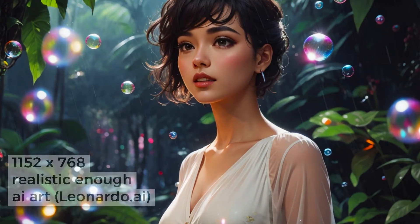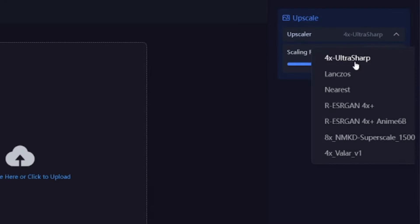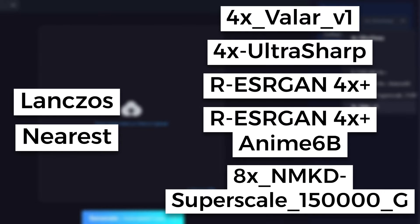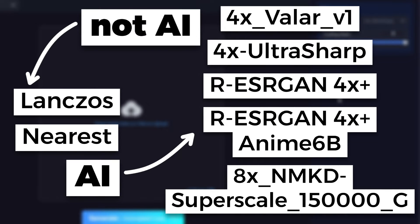I'll use these three images to show you the difference between upscalers, and I'll set the Scaling Ratio Value to 3. After opening the upscalers list, you can be a little confused seeing seven different methods. These five are AI upscalers, and these two are more traditional mathematical interpolation methods. AI upscaling methods cost more credits and generation takes more time, but results are better in most cases.